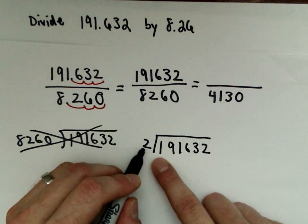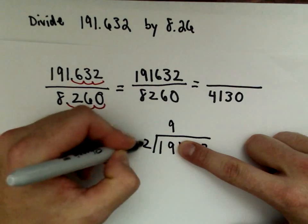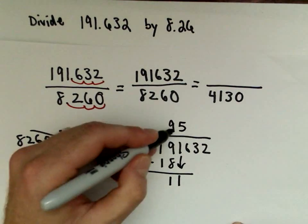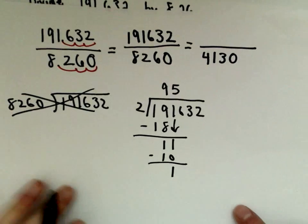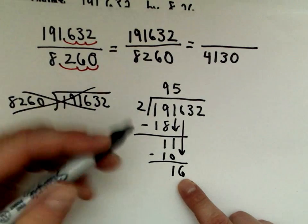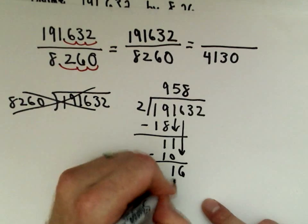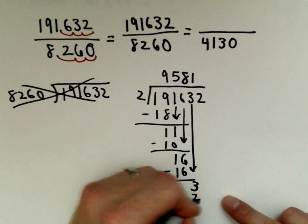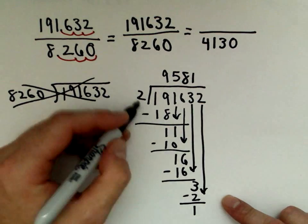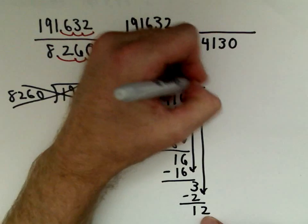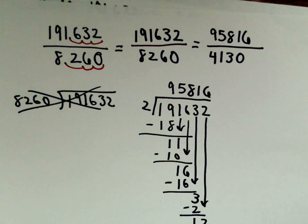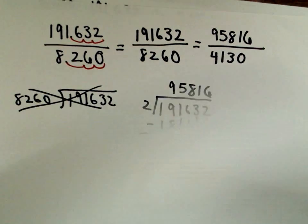All right, here we go. So 2 doesn't go into 1, but it goes into 19. 2 will go into 19 nine times. 2 times 9 is 18. Subtract, there's 1. Drop down our 1. 2 will go into 11 five times. 2 times 5 is 10. Drop down the 6. 2 goes into 16 eight times. 8 times 2 is 16. Drop down the 3. 2 will go into 3 once. 1 multiplied by 2 is 2. Subtract. Drop down the 2. 2 goes into 12 six times. So now I'm left with 95,816. Again, they're both even in this case, which means originally 4 must have went into both of these numbers.